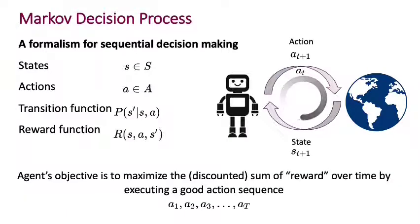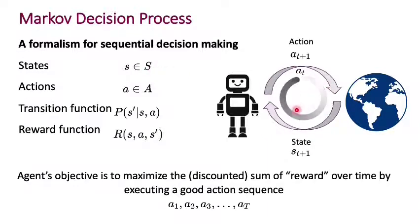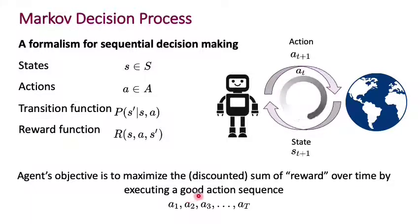You'll remember that we've spoken about Markov decision processes where an agent executes an action A_T belonging to a set of actions A, and then observes the state S from a set of states S. This process repeats over and over. The world transitions given a transition function — probability of S-prime given S and A — and there's a reward R of S, A, S-prime associated with every transition. The agent's objective is to maximize the discounted sum of reward over time by executing a good action sequence A1 through A_T, where T in some cases could be infinity.